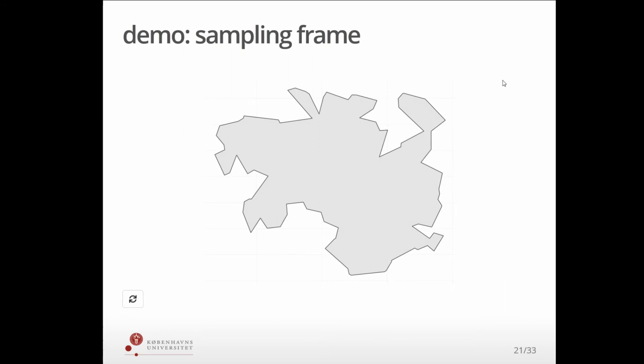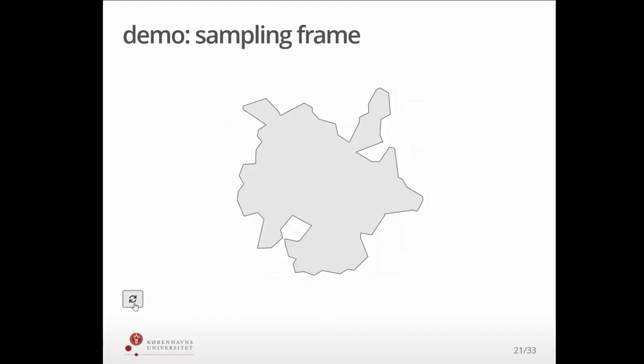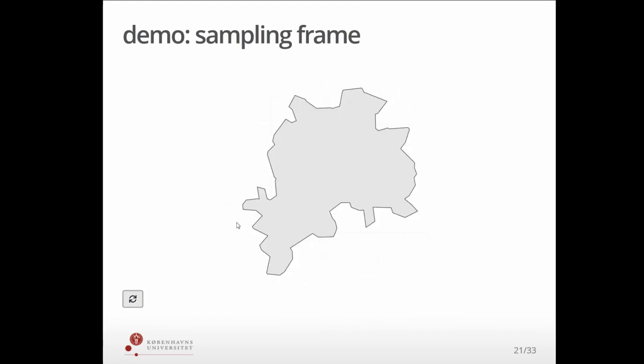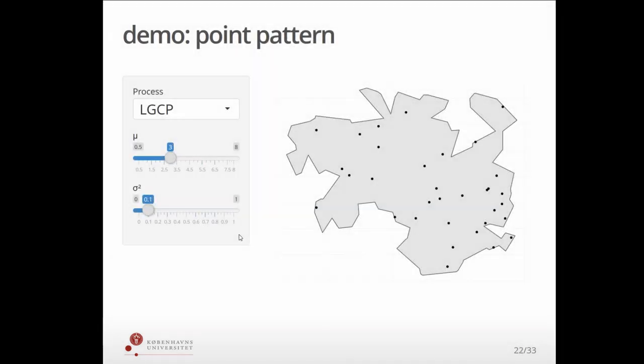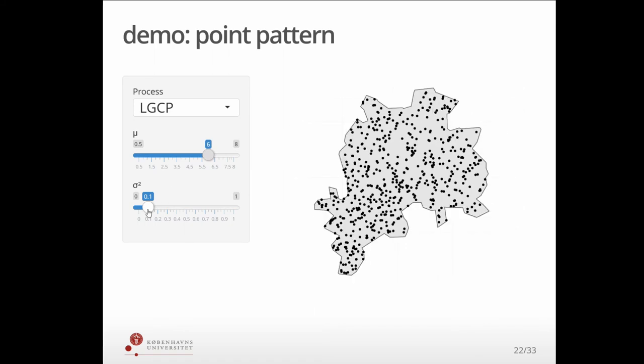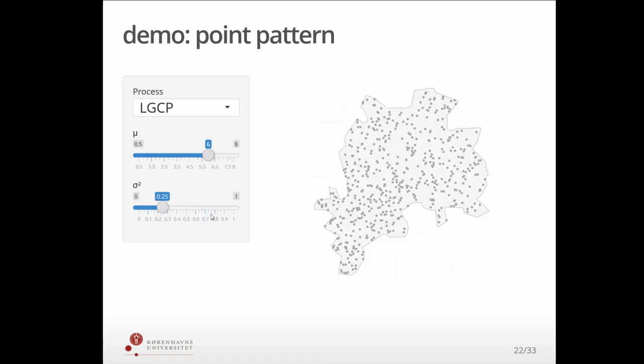So to take you through a typical analysis, you start with the area you want to survey. In this case, I'm just generating a random blob. And then you have your target data. Again, we'll generate some randomly. And this might be a scatter of sites. If we upped the intensity of this log Gaussian Cox process that generates the sites, we could say, okay, maybe this is more like an artifact scatter, more dense.